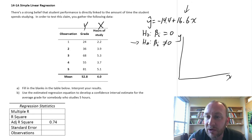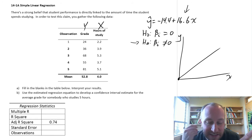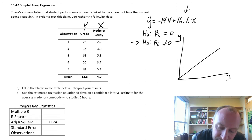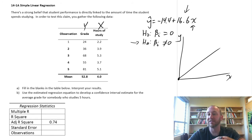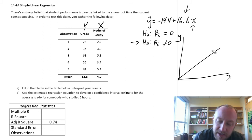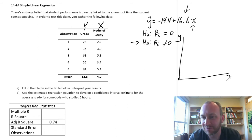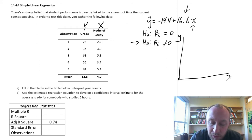For the intercept, if it's found to be not statistically different from zero, all that means is that the regression line passes through the origin — meaning that if students don't study at all, the average grade would be zero. We'll do both tests, but what's really more interesting here is the test on the slope.